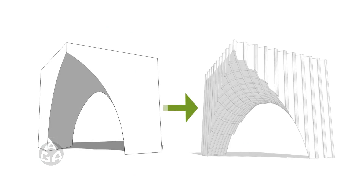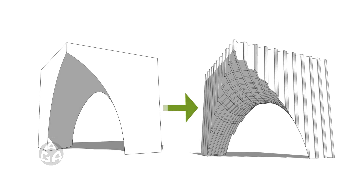The modeling process in general has two steps. First, we need to create the form, and later we must turn it into a waffled structure. So let's first learn how to create the form.